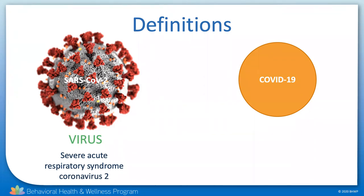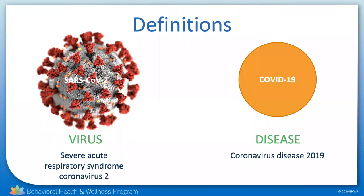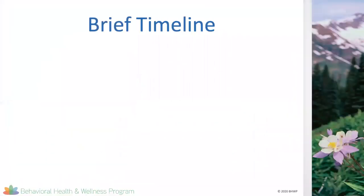At the end of the SARS epidemic, it had caused 8,422 known cases, of which 916 died, a case fatality rate of about 11%. The virus of concern now, SARS-CoV-2, causes the disease COVID-19. COVID is short for coronavirus disease, and the 19 is the year in which it was first identified, December 2019 in China.